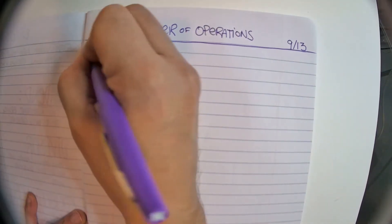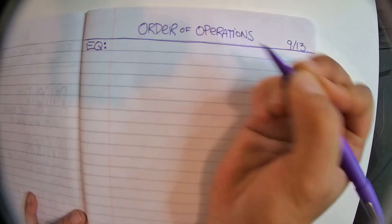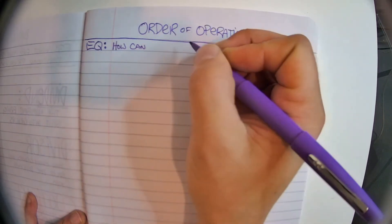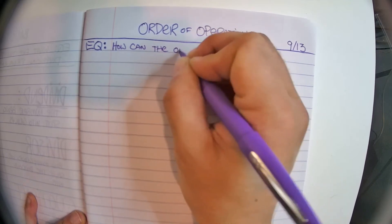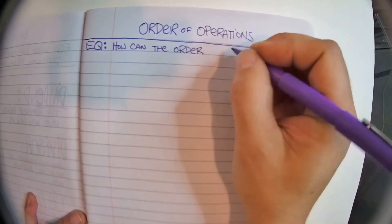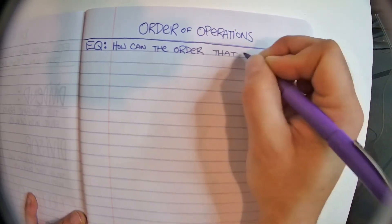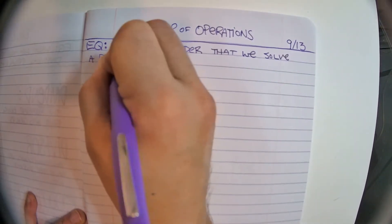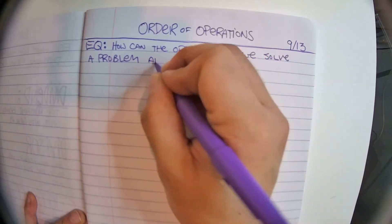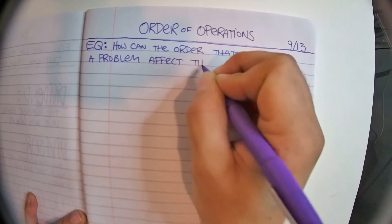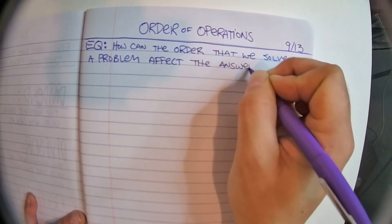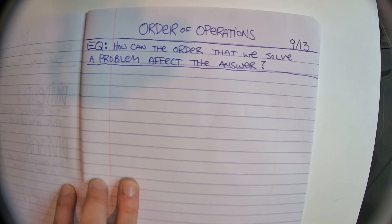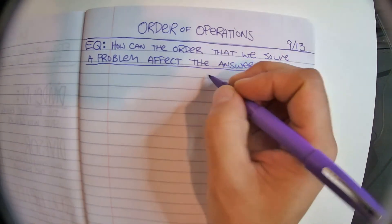You're going to include our essential question. Our essential question is: How can the order that we solve a problem affect the answer?